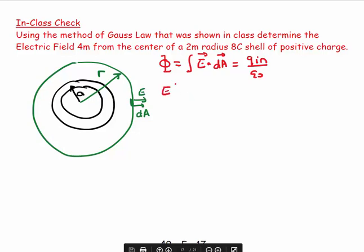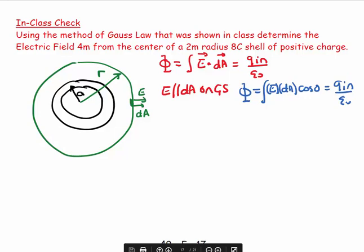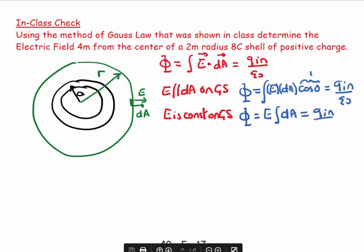E is parallel to dA on the Gaussian surface, so flux equals the integral of the magnitude of E times the magnitude of dA times the cosine of zero, because they're parallel, which equals Q_inside over epsilon naught. Cosine of zero equals 1. And since E is constant on the Gaussian surface, flux equals E times the integral of dA, which equals Q_inside over epsilon naught.